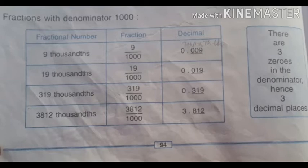It is on page number 94 in the sum. The first question is the fractional number 9 thousandths. How do we write 9 by 1000? When we convert it into decimal, we get 0.009.